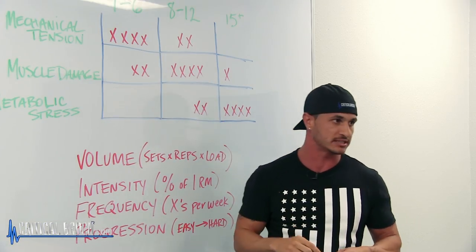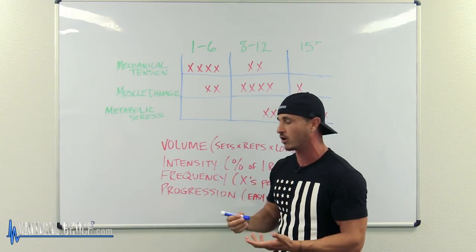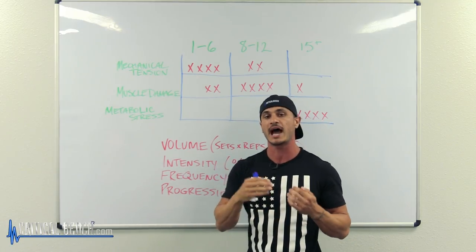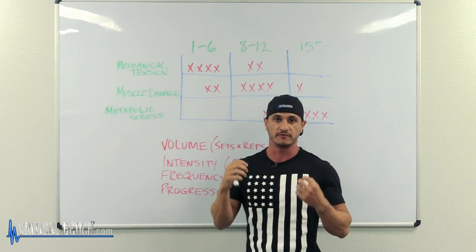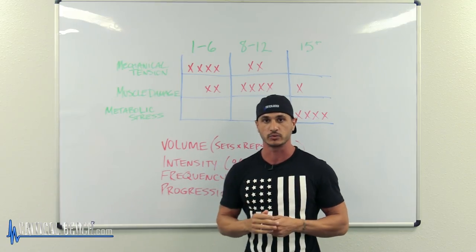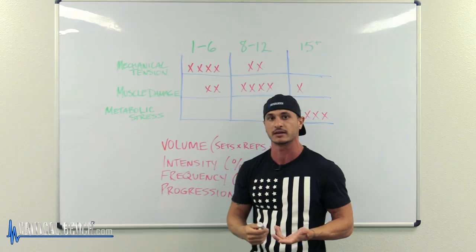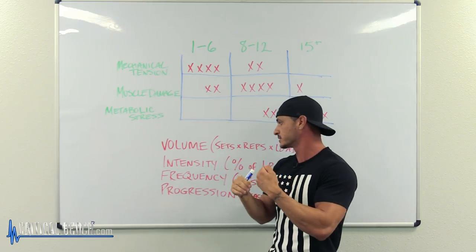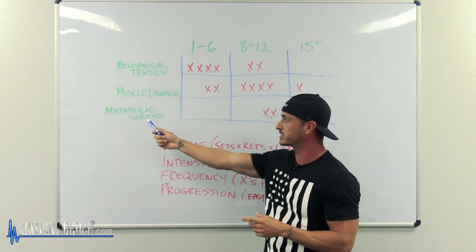You might have a hypertrophy day where you train in the 8 to 12 rep range, and then you'll have your metabolic stress day where you'll train with a lighter load for a higher volume. Now depending on what your goals are, you may have to split your training up in a different way, but for the sake of this video let's just assume that you are going to be doing a full body three days a week.